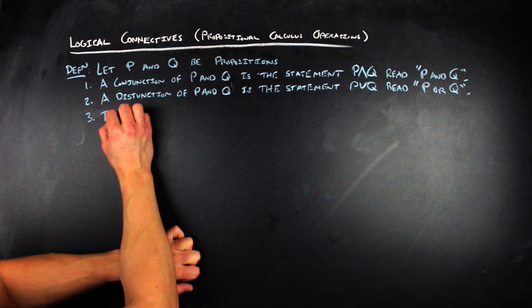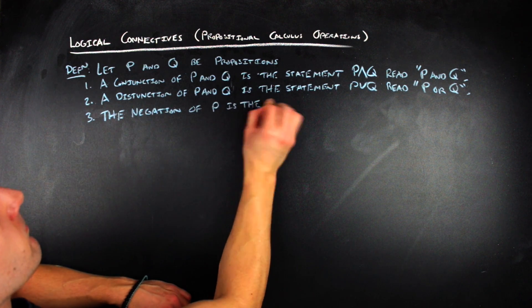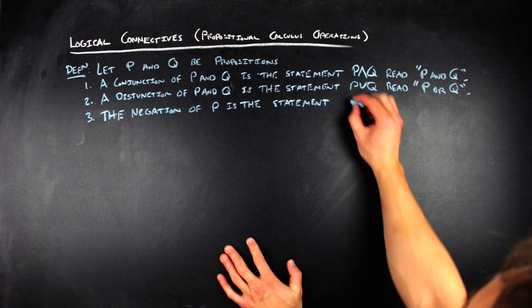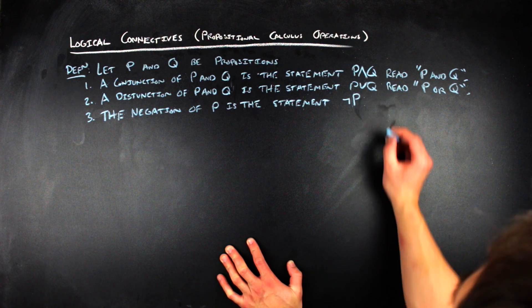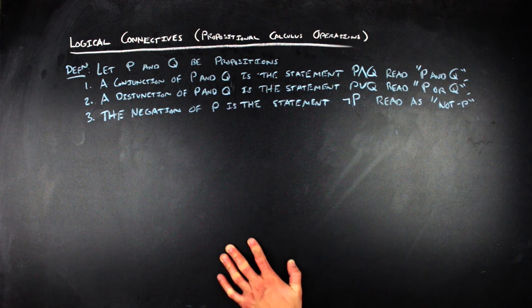Three, the classic negation. So the negation of a statement P is the statement bar P or like negative P, however you want to write it. And it's just read as not P.